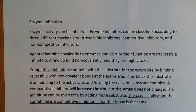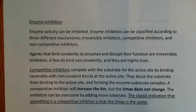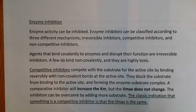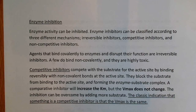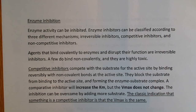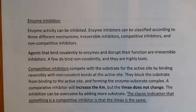We're ready to start discussing enzyme inhibition, covering three main types. All enzyme activity can be inhibited. Enzyme inhibitors can be classified according to three different mechanisms: irreversible inhibition, competitive inhibition, and non-competitive inhibition. Agents that bind covalently to enzymes and disrupt their function are irreversible inhibitors. A few bind non-covalently, and they are highly toxic.